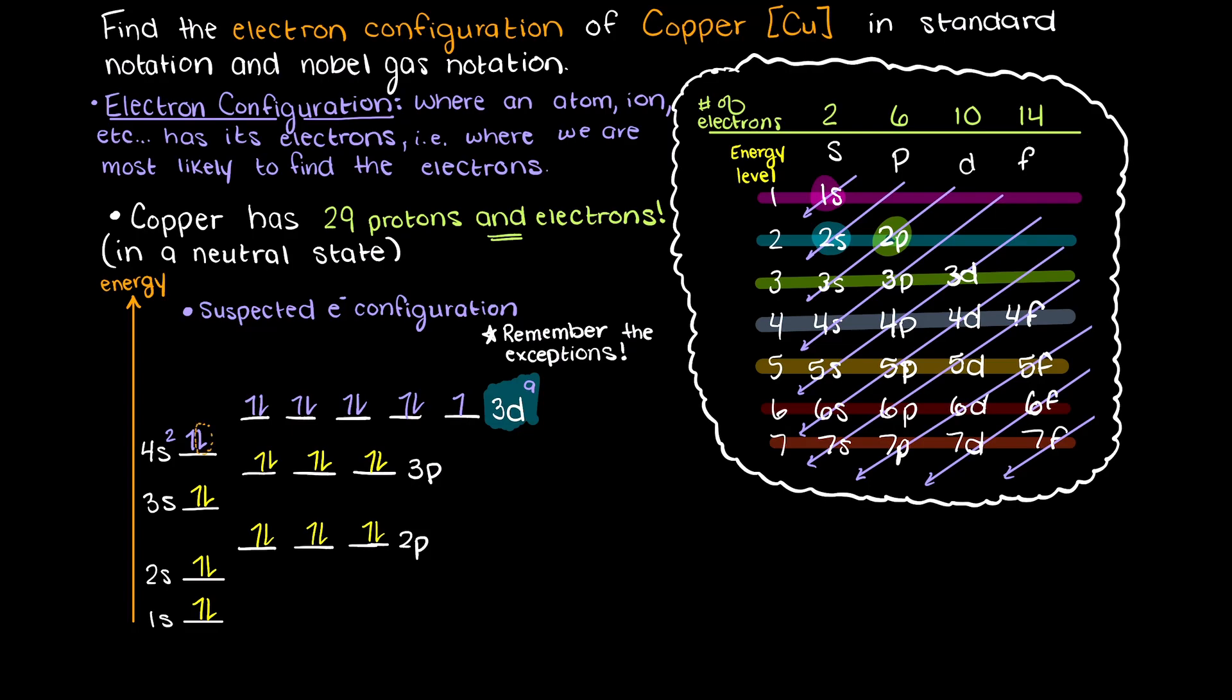silver, and gold, they will steal an electron from the lower 4s and use that to fill out the d orbital, which is much more stable.